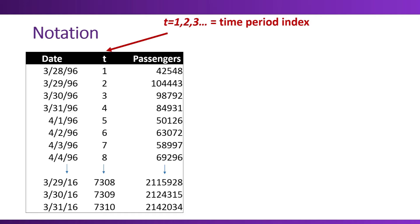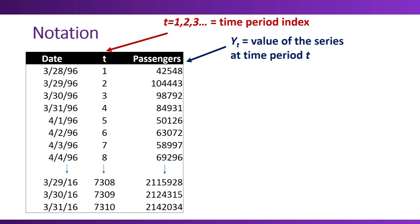The second notation that we'll use is Y sub T. Y_T is the value of the data series at time period T. So for example, Y1 is the number of passengers that traveled on MRT on day one, and in this example we see that we had 42,548 passengers.